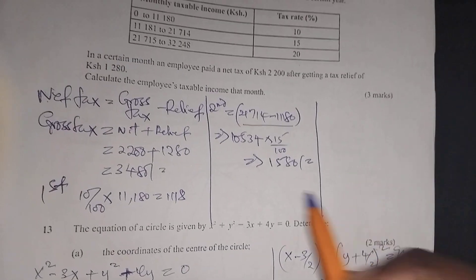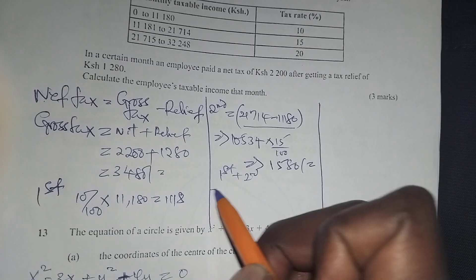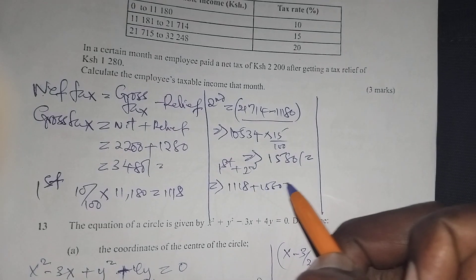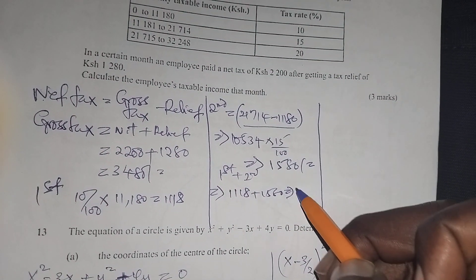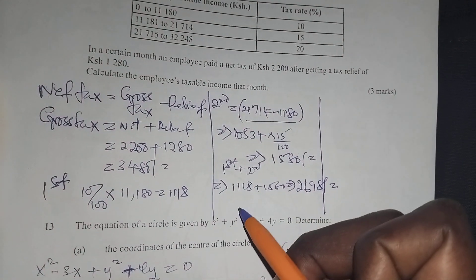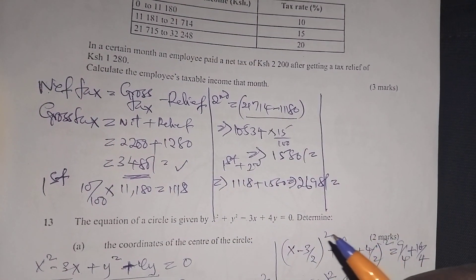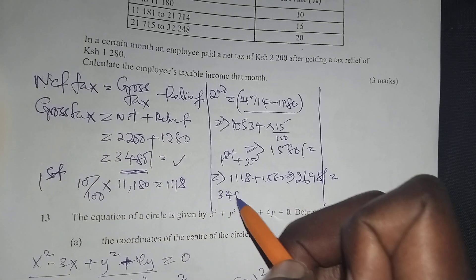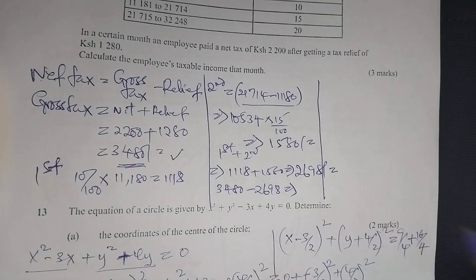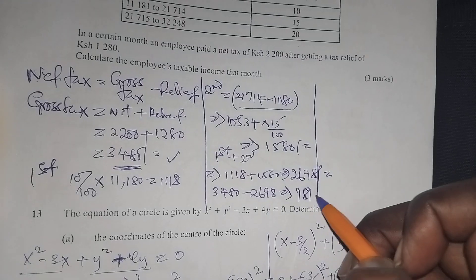You realize that when you add the first band and the second band — $1,118 plus $1,580 — you get $2,698. The remaining amount came from the third band. So you have $3,480 minus $2,698, and you get $781.90.